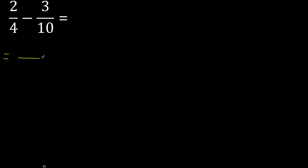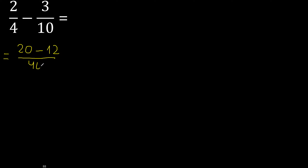First, multiply like this, then multiply by 2: 20, minus 4, multiply by 3: 12. Here 4, multiply by 10: 40. 20 minus 12 equals 8.